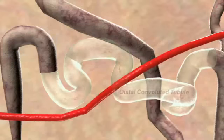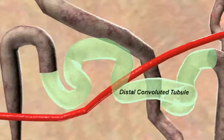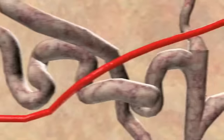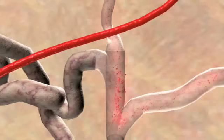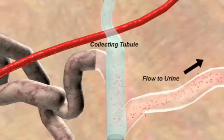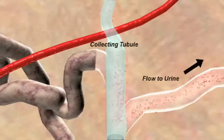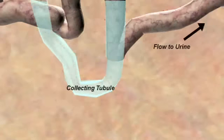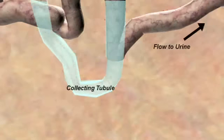The next section is called the distal convoluted tubule. This section does not allow water to reabsorb, but reabsorbs sodium through the sodium chloride ion cotransporters. The thiazide diuretics act here on this transporter. The last section of the nephron is called the collecting tubule. Sodium channel blockers and aldosterone antagonist diuretics act here.